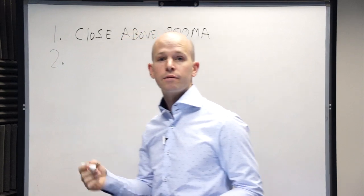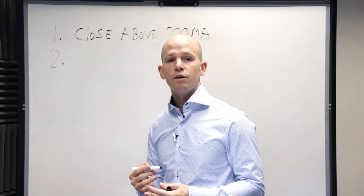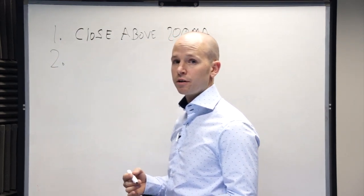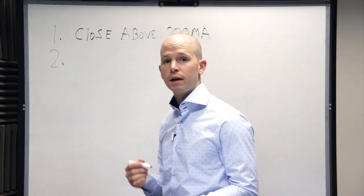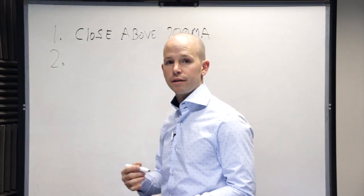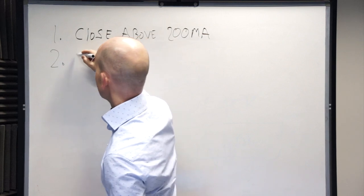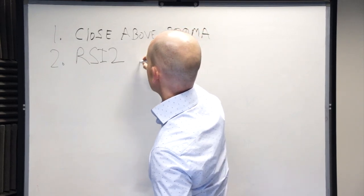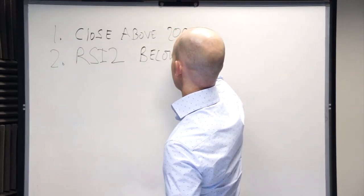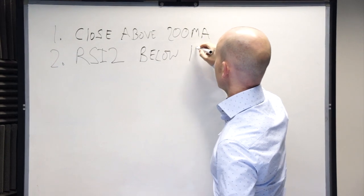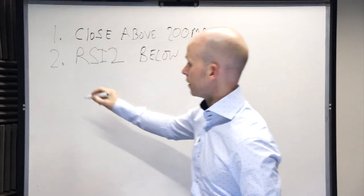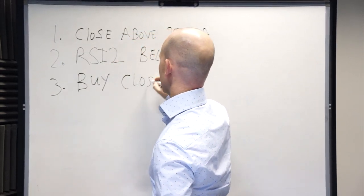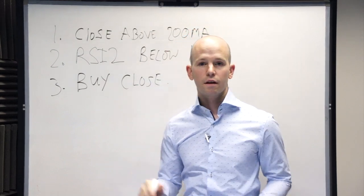We're looking to buy slight pullbacks. So second rule, ever so simple. We're looking at RSI, we're actually looking at a two period RSI, not the standard 14 period. We're looking at a two period RSI. And when the RSI drops below 10, then we look to buy at the close of that bar. So RSI2 is below the value of 10, then buy at the close. That's it, three rules.